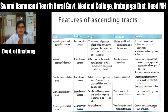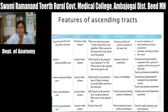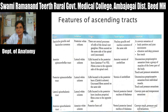Lateral spinothalamic tract is in the lateral white funiculus; cells are located in the posterior horn, mainly in substantia gelatinosa and nucleus proprius; fibers cross to the opposite side and terminate in the ventral posterolateral nucleus of the thalamus; function is to convey pain and temperature sensation from the contralateral side. Anterior spinothalamic tract is in the anterior white column; cells of origin are in the posterior horn; terminates in neurons of ventral posterolateral nucleus of the thalamus; carries crude touch, pressure, itch, and tickle sensation.